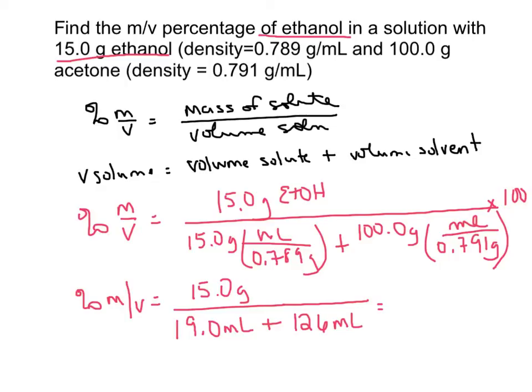So 19 plus 126, I get 145. I take 15 divided by 145 times 100, and I get a percentage of 10.3% mv. I do need to include that mv in there so I know what type of percentage it is.